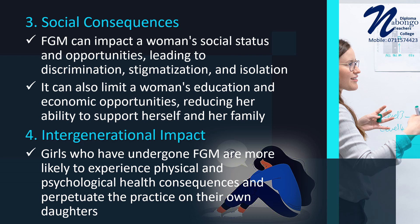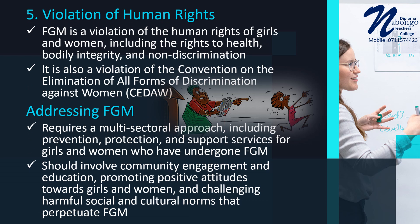Number 4 — Intergenerational Impact: FGM can have intergenerational impacts, with girls who have undergone FGM being more likely to experience physical and psychological health consequences and perpetuate the practice on their own daughters. Number 5 — Violation of Human Rights: FGM is a violation of the human rights of girls and women, including the rights to health, bodily integrity, and non-discrimination. It is also a violation of the Convention on the Elimination of All Forms of Discrimination Against Women. In conclusion, FGM is a harmful practice requiring a multisectoral approach including prevention, protection, and support services, community engagement, promoting positive attitudes towards girls and women, and challenging harmful social and cultural norms that perpetuate FGM.